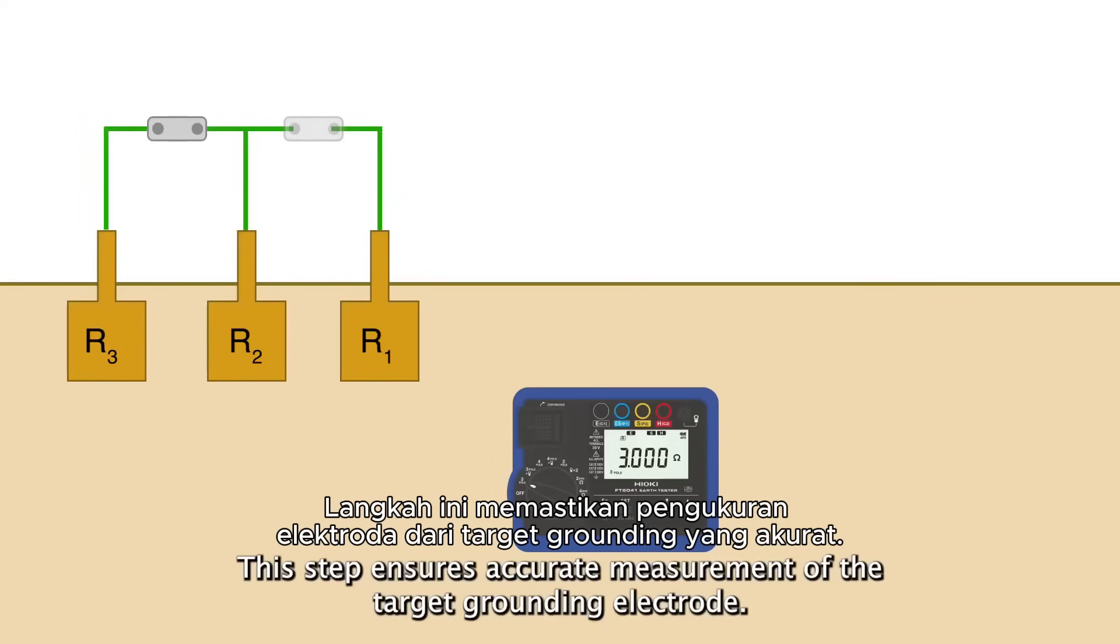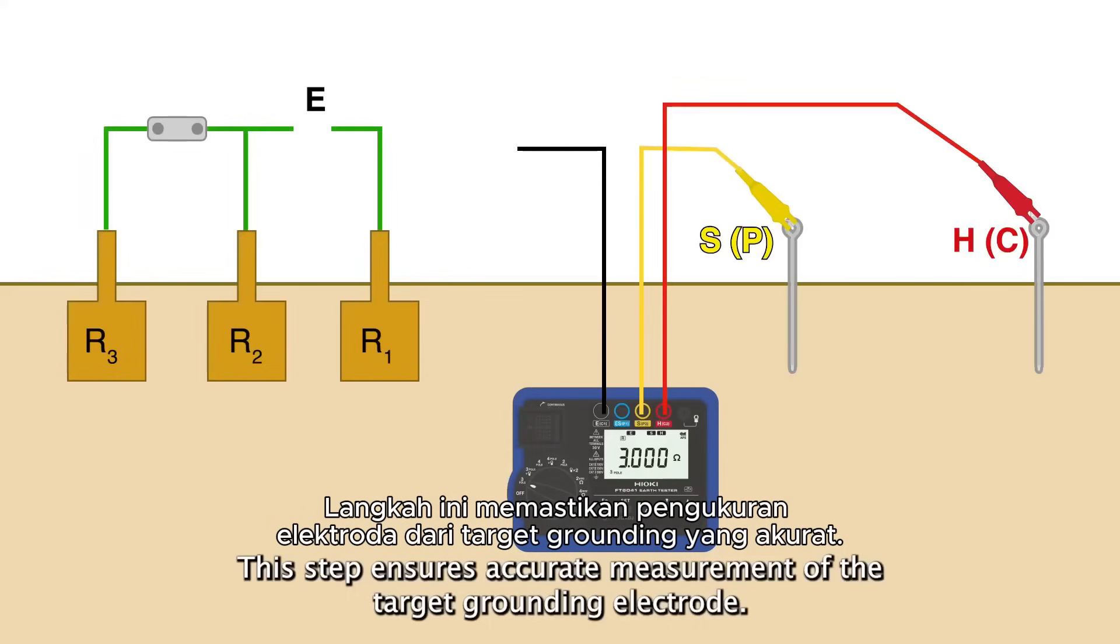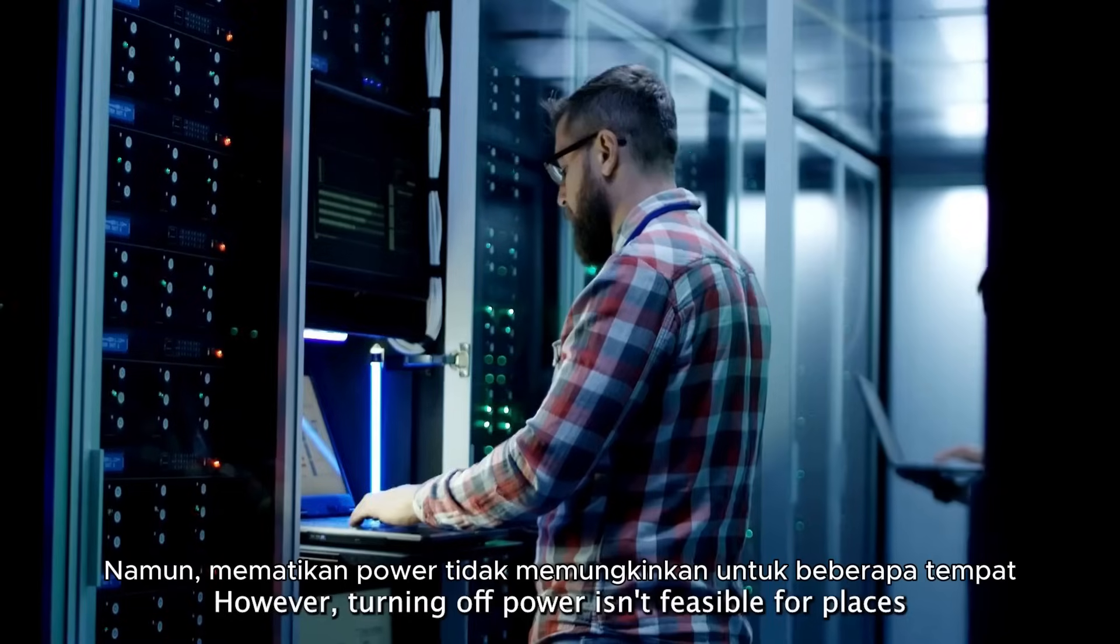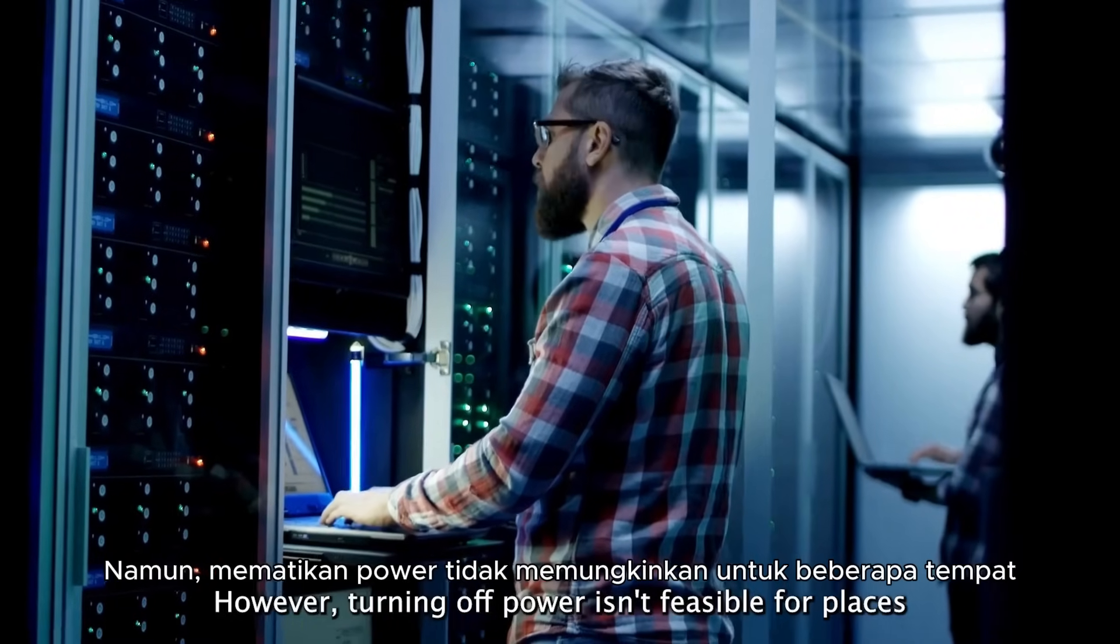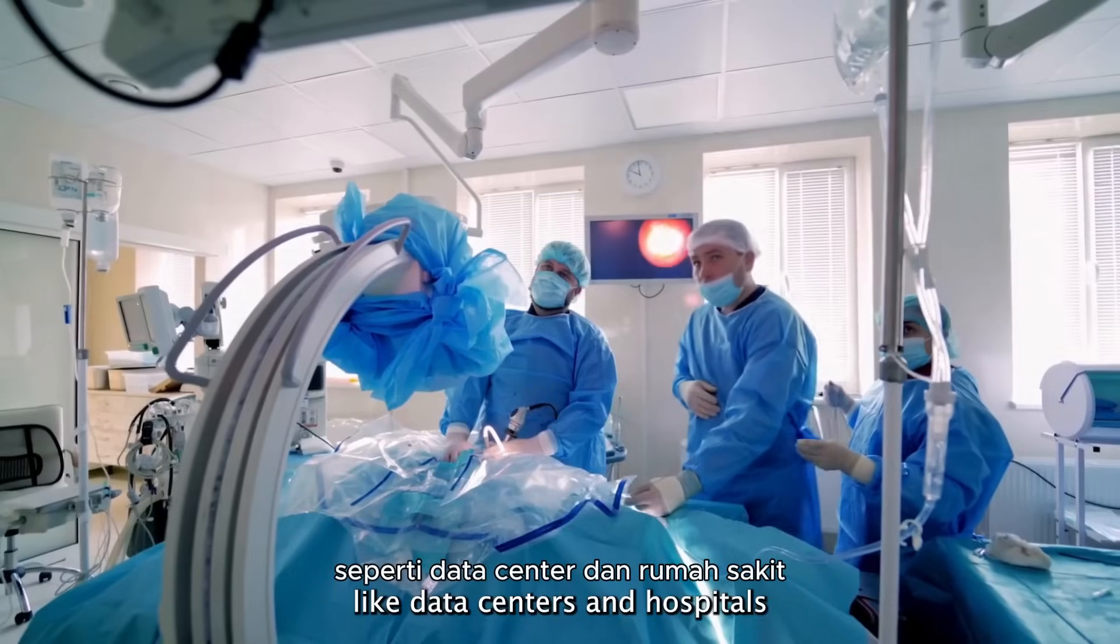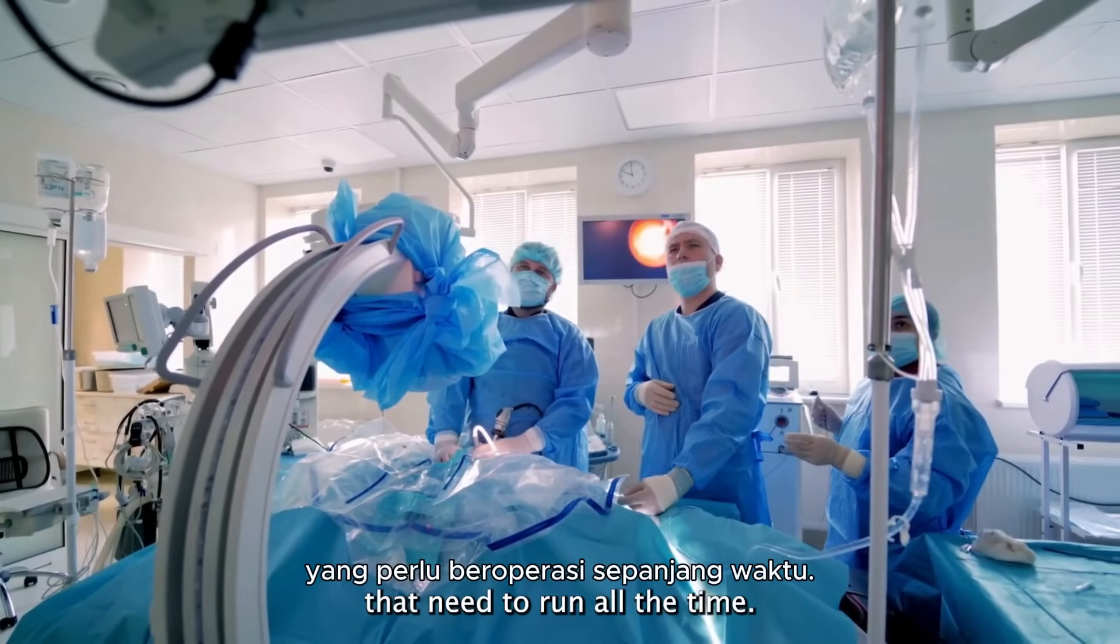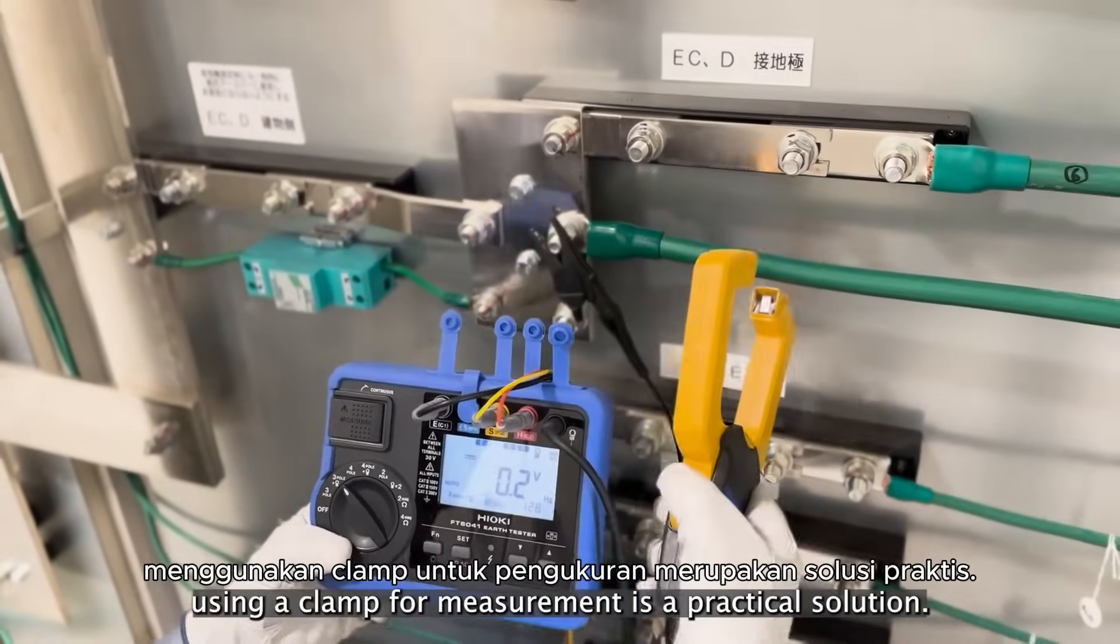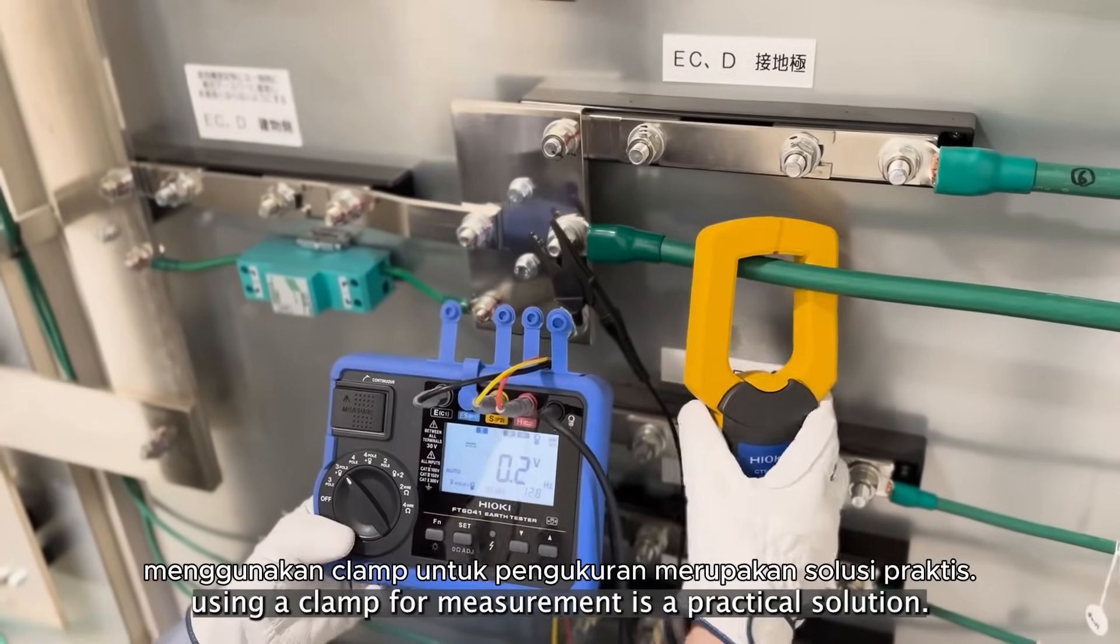This step ensures accurate measurement of the target grounding electrode. However, turning off power isn't feasible for places like data centers and hospitals that need to run all the time. For these situations, using a clamp for measurement is a practical solution.